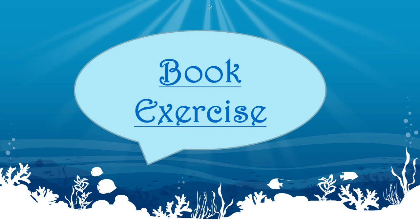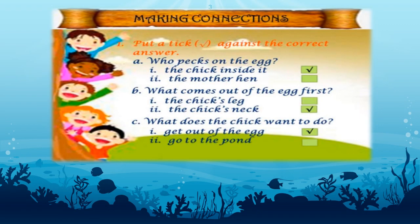First of all, we are going to discuss the book exercise. Making connections. Question 1 is: put a tick right against the correct answer. Children, you have to put a tick against the option that you feel is the correct one. Let us start today's class.